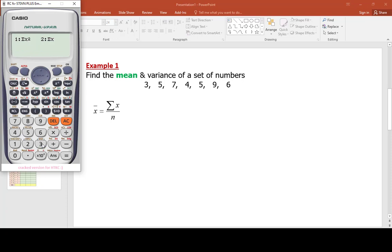We go to shift 1. We are going to select for number 2 and then press equal. Now we have summation of X equals to 39.